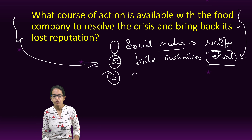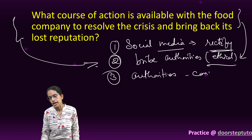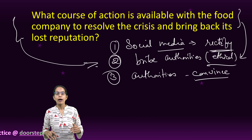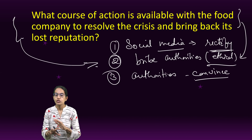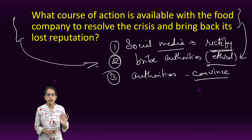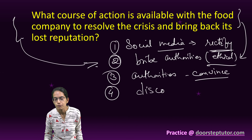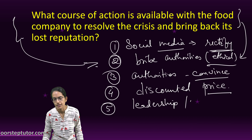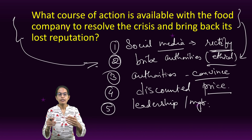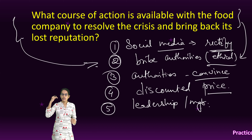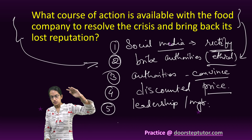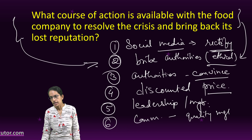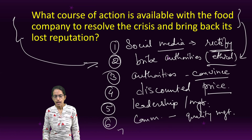The third option is for the company to convince the authorities. This is a better practical option — the company can say this was a mistake, they will recall the products, request that their name not be published on social media, and offer new stock at a discounted price. Another option is a change in leadership or management, since the faulty management was impacting reputation. The top hierarchies could be changed, communication processes made smooth, and quality management systems put in place.